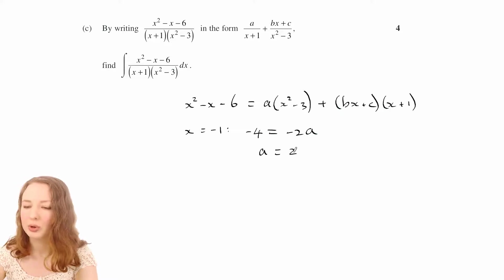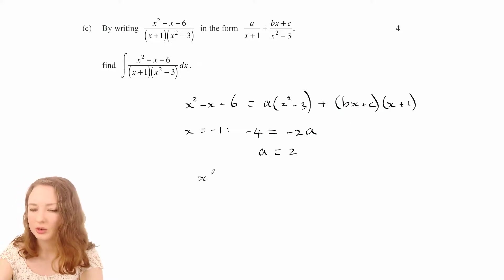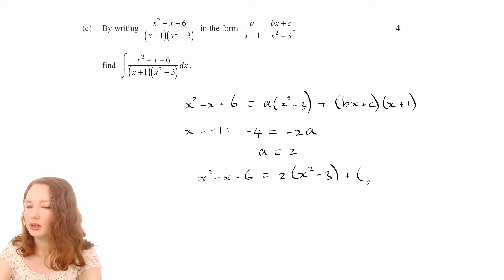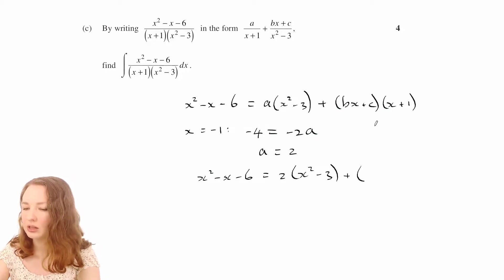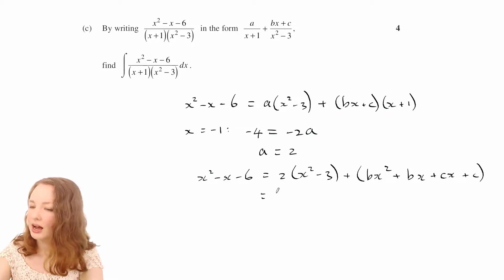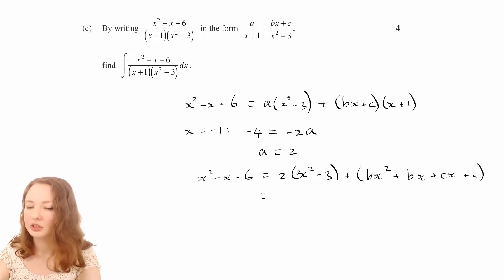Now what I might do is put that back in and then do the thing with the coefficients. So we've got x squared minus x minus 6 equals 2x squared minus 3 plus... Let's expand that. So we've got bx squared plus bx plus cx plus c.